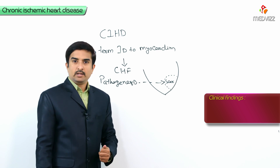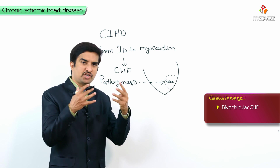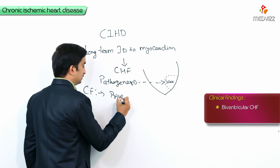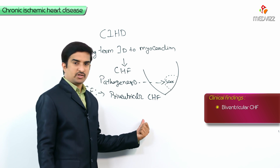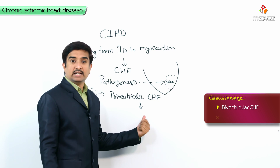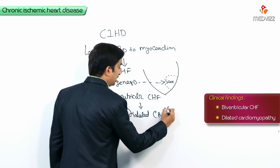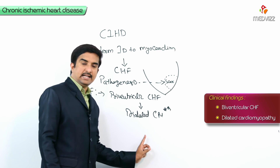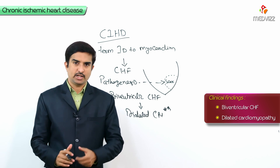The clinical findings in chronic ischemic heart disease: there will obviously be left ventricular failure, which automatically leads to right ventricular failure, giving biventricular congestive heart failure — that is, both left and right-sided congestive heart failure. This progresses to the development of dilated cardiomyopathy — an important MCQ point. So biventricular congestive heart failure at later stages develops into dilated cardiomyopathy. With this, we have completed chronic ischemic heart disease.